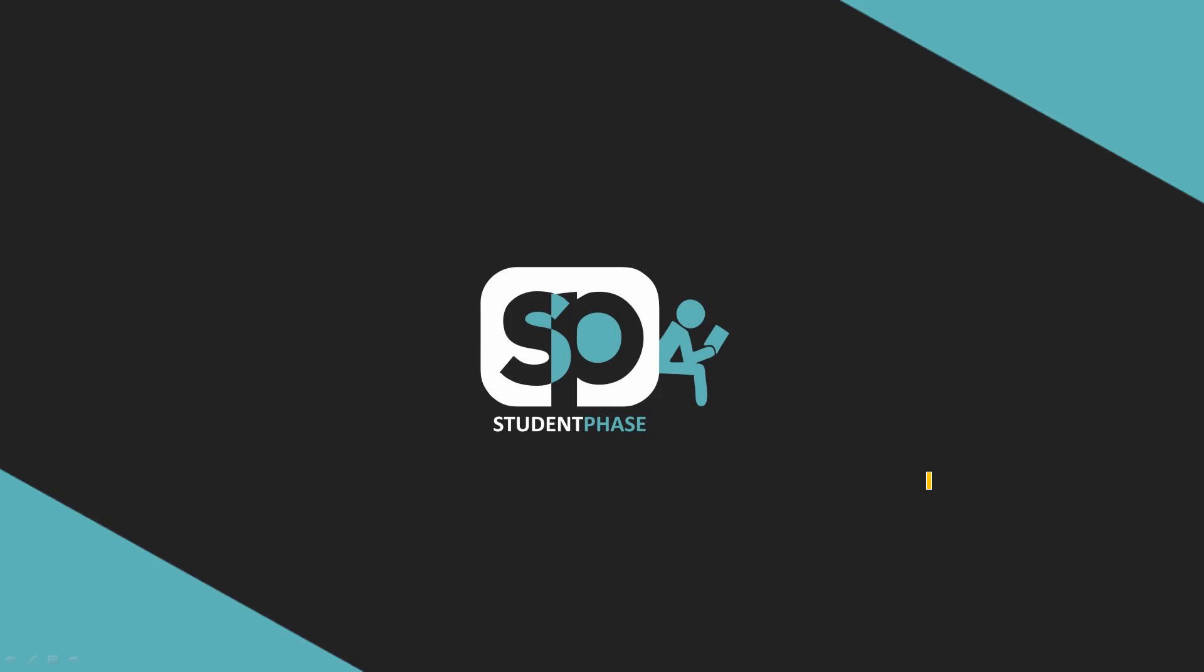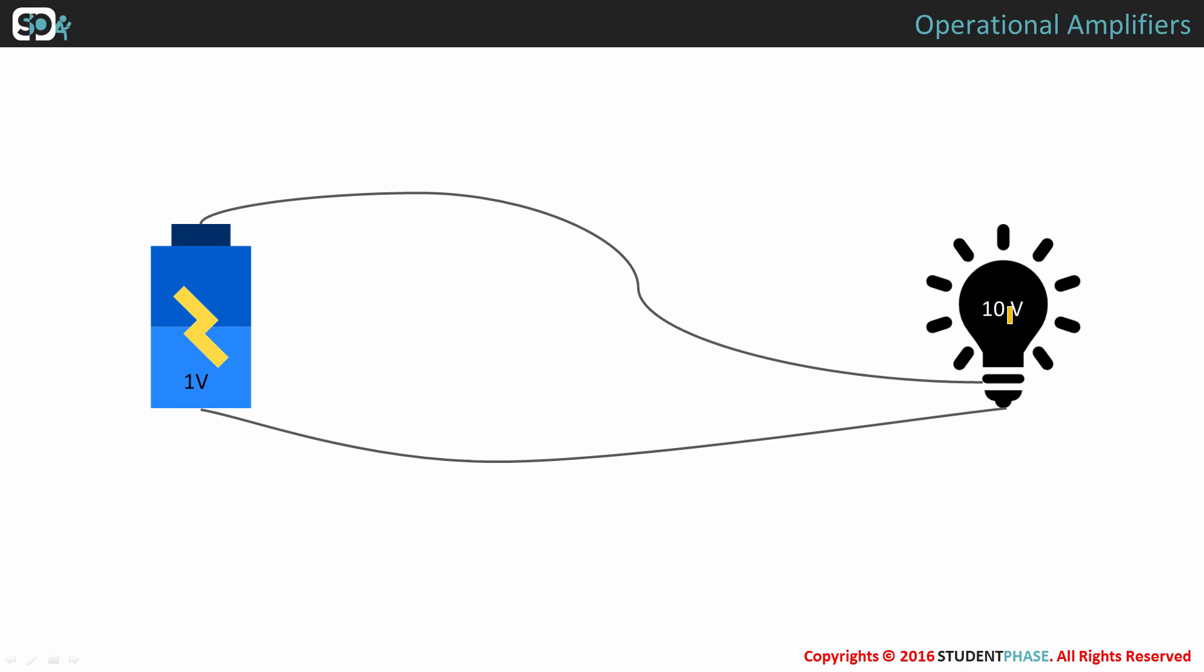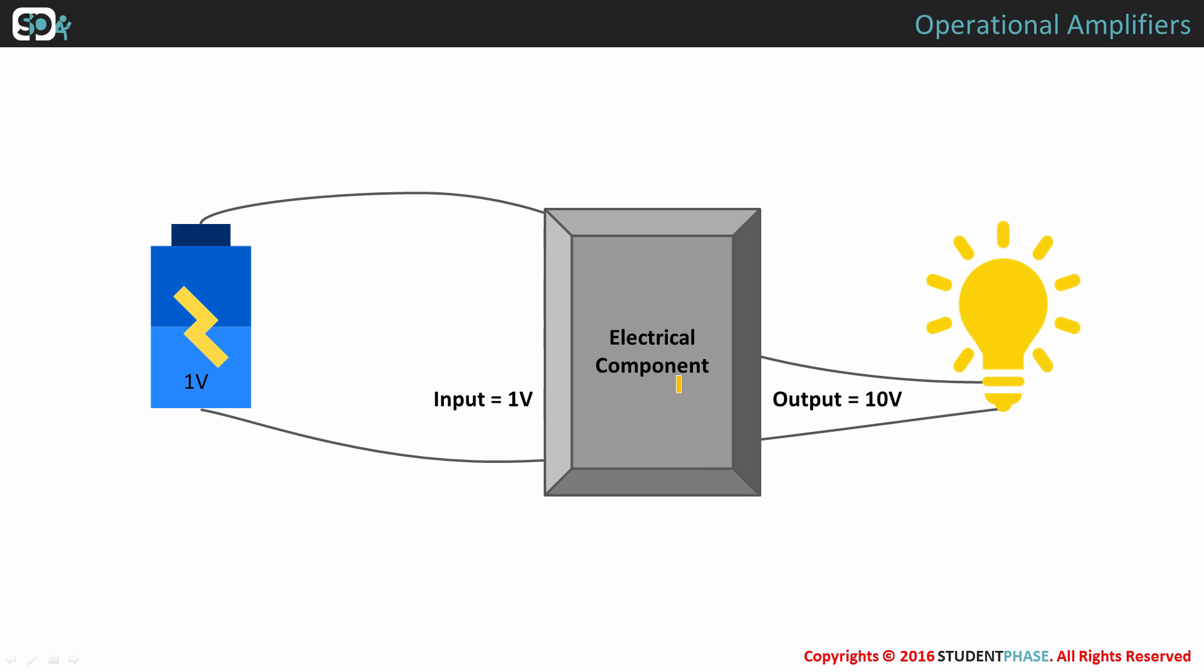Let's assume we have a battery of 1 volt and a bulb which requires 10 volts to light up. In such cases, we need an electrical component which amplifies 1 volt input to 10 volts. The component which does this is called an amplifier.